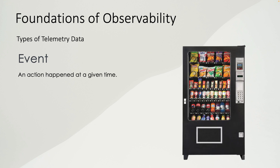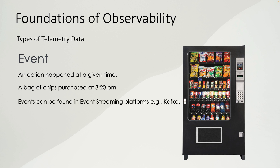What's an event? An event is an action that happened at a given time. If you think of a vending machine as your system, a customer purchasing a bag of chips at 3:20 p.m. is an event, because it has an action — the purchasing of the chips — and a timestamp of 3:20 p.m.